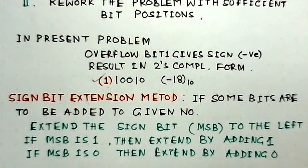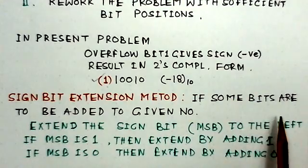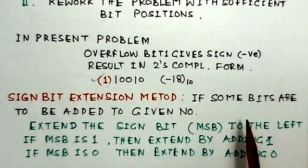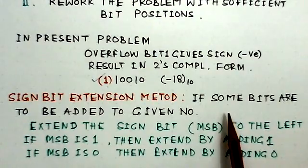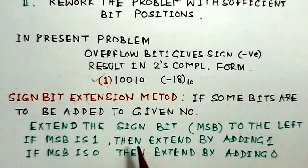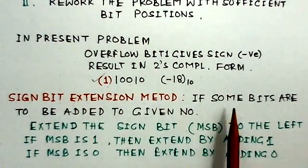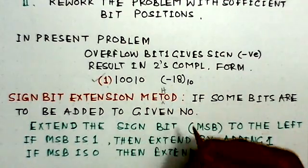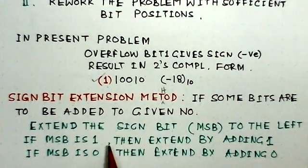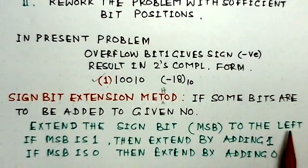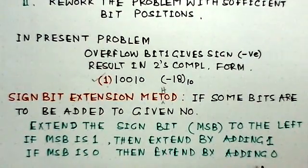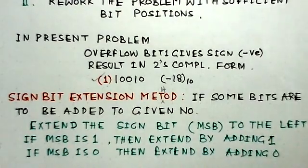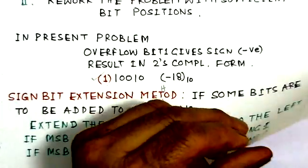Another very important topic on which good number of questions are asked is sign bit extension. When the number of bits are not enough and we need to add bits to a word, the procedure is the signed bit extension method: extend the sign bit as per the MSB to the left. If the MSB is 1, extend by adding 1s; if MSB is 0, extend by adding 0s. This rule is used when solving GATE examination problems.